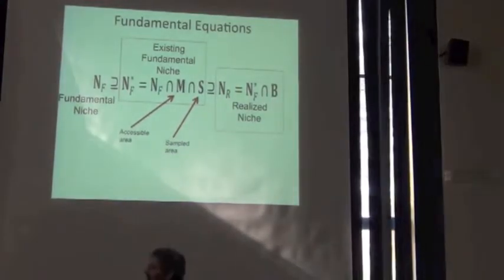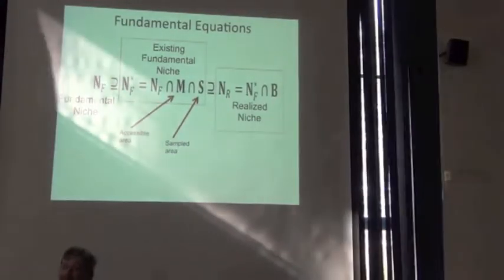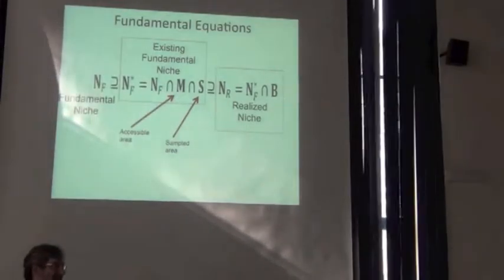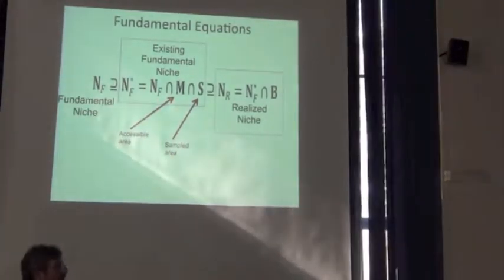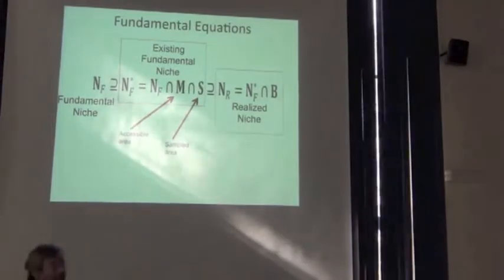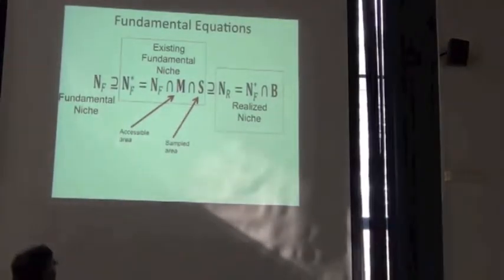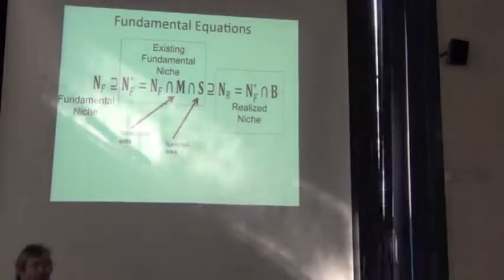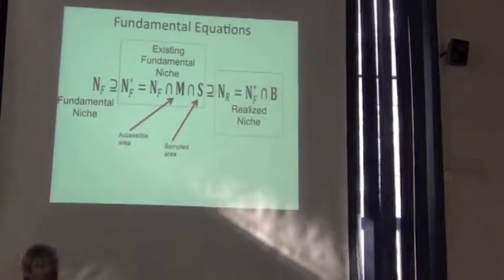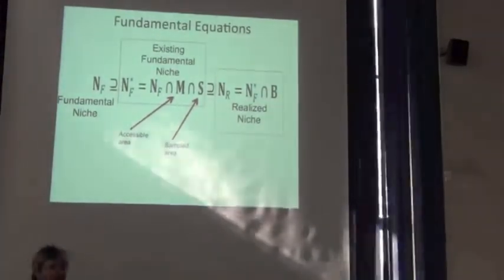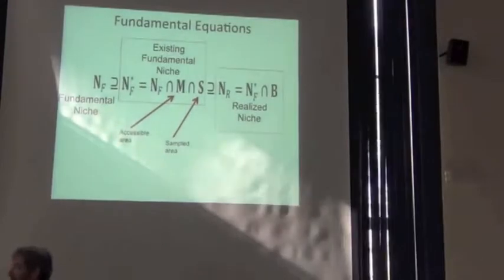Another way of putting this is that we find niches to be different. That may be a consequence of real evolved niche difference. It may be a consequence of different representation of environments across the accessible area. Or it may be a consequence of different sampling of environments.